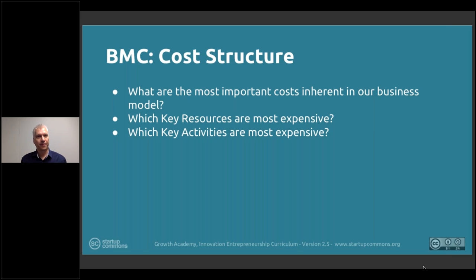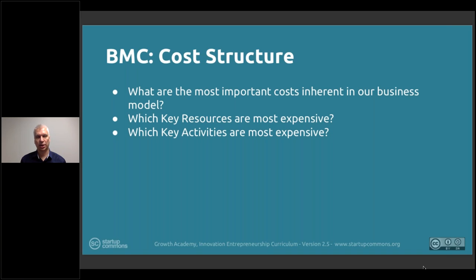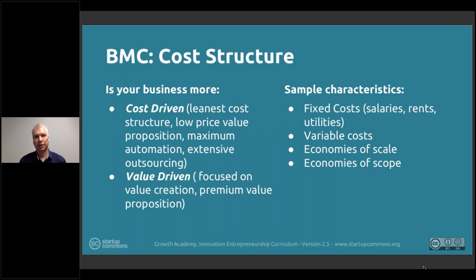Cost structure looks at what all of this costs — time, money, or other resources — for whatever items are put there. Then prioritize those based on whatever dimension: what are the most expensive, the most efficient, or what delivers the best return for the expense in context of what you're doing. The cost structure also considers whether the business model is more cost-driven or value-driven.